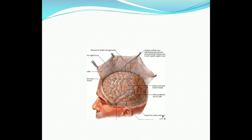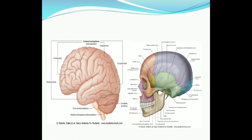So the dura is here: extradural abscess — pus collected outside the dura; subdural abscess — pus collected between the dura and arachnoid; inflammation of the arachnoid and pia leads to meningitis. The part of the brain in close proximity to the middle ear is the temporal lobe of the cerebrum and the cerebellum, so these two are the most common sites of brain abscess.